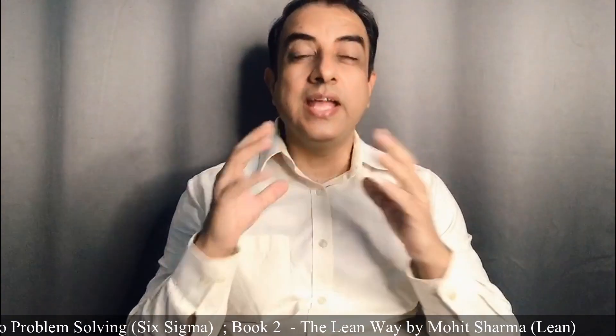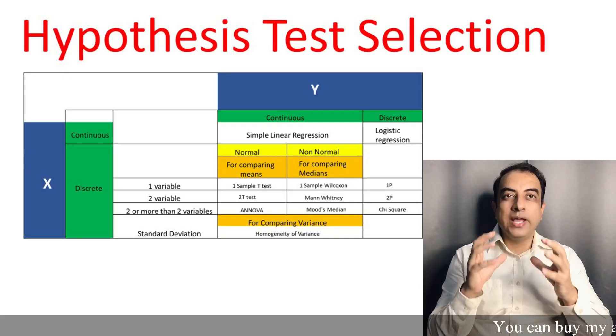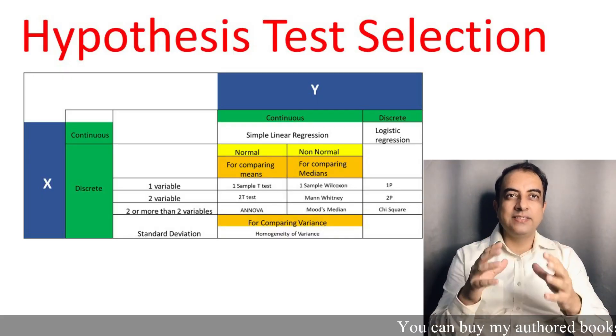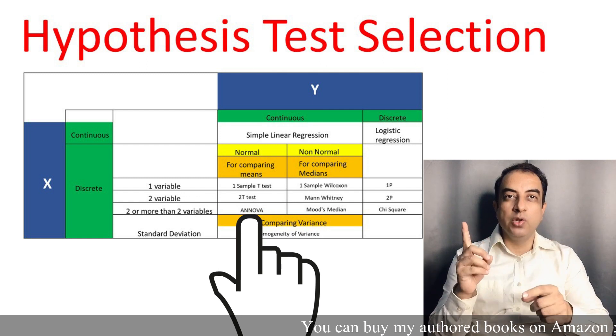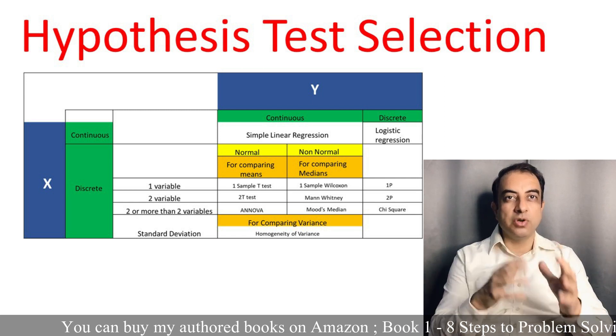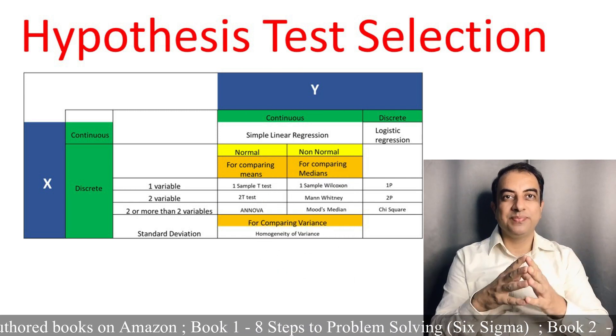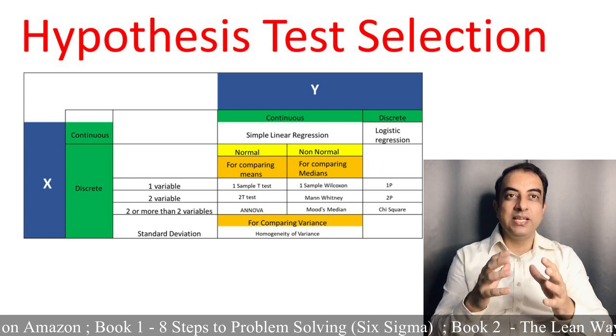In any project there could be only three types of data — with data I mean your project Y. The three types are: Y could be continuous and normal, Y could be continuous and non-normal, and Y could be discrete. When Y is continuous and normal and X is discrete, we use one-way ANOVA. When Y is continuous and X is also continuous, we use simple linear regression. Let us go to Minitab and see how these tests are performed.